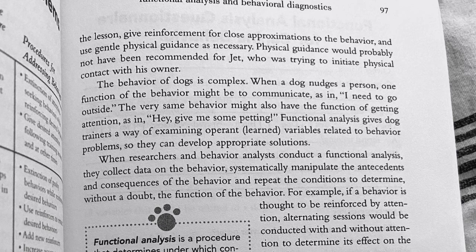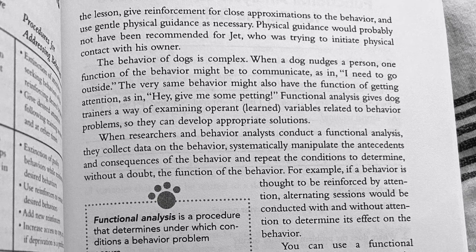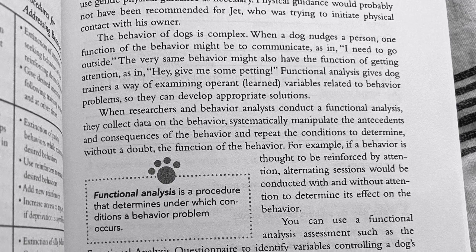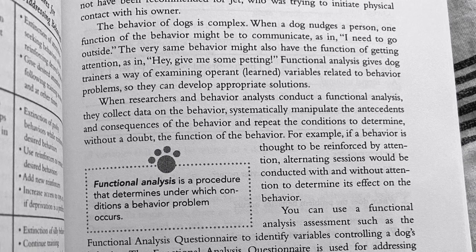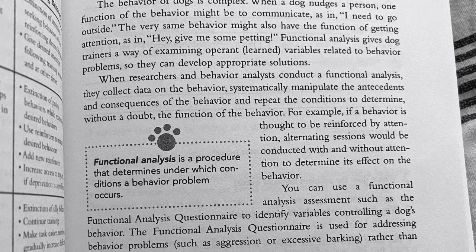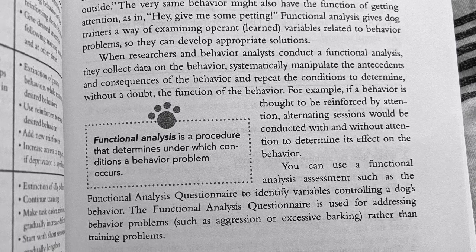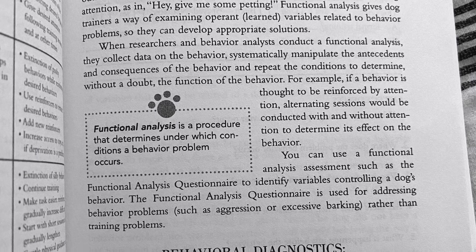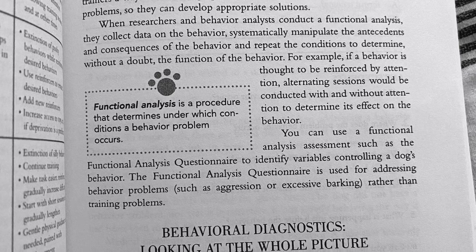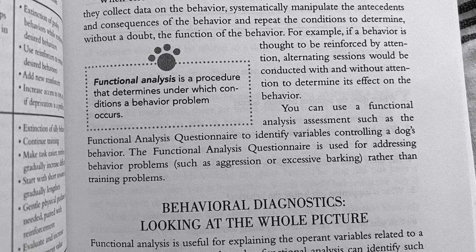The behavior of dogs is complex. When a dog nudges a person, one function of the behavior might be to communicate — 'I need to go outside' — while the very same behavior might also have the function of getting attention, as in 'give me some petting.' Functional analysis gives dog trainers a way of examining operant learned variables related to behavior problems so they can develop appropriate solutions. When researchers and behavior analysts conduct a functional analysis, they collect data on the behavior, systematically manipulate antecedents and consequences, and repeat conditions to determine, without a doubt, the function of the behavior. The functional analysis questionnaire identifies variables controlling a dog's behavior and is used for addressing behavior problems such as aggression or excessive barking, rather than training problems.